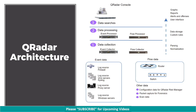Before jumping to interview questions, the most important thing to understand is QRadar architecture. It is a three-tier architecture, with collectors at the base level, then processors positioned over collectors, and finally the console at the top.